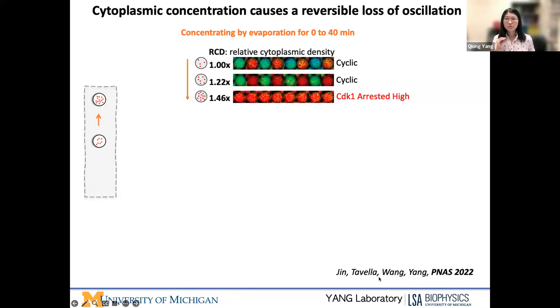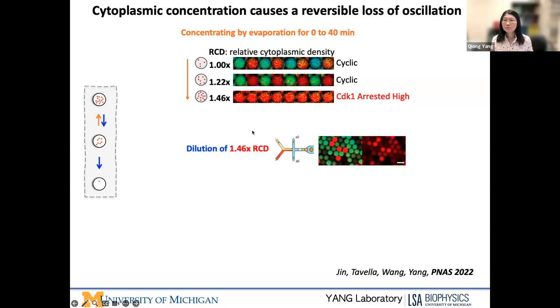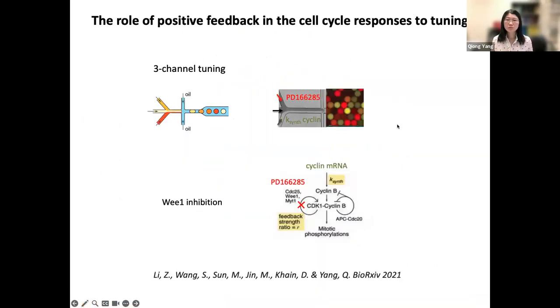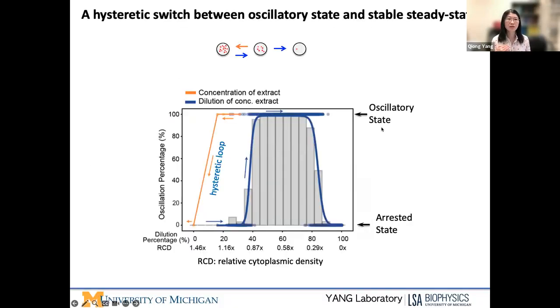The cell cycle is also very robust to concentration. When we evaporate the droplet to increase the concentration, we found it can still oscillate until up to about 50 percent above the endogenous level when CDK-1 is arrested as a high stable steady state. What's interesting is if you dilute this arrested state, they can rescue the oscillation. But the rescue seems to not follow the same trend back because you need to dilute way below endogenous level to recover these oscillations. That creates this hysteretic loop. The system can switch between oscillatory state and arrested state in responding to concentration change, but also depending on where the initial state is from. It looks like the cells have some memory about their history in order to respond to the signal change.